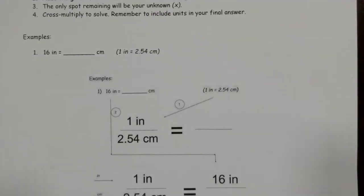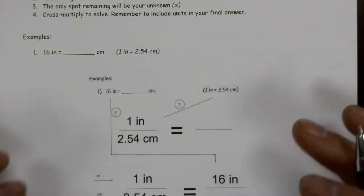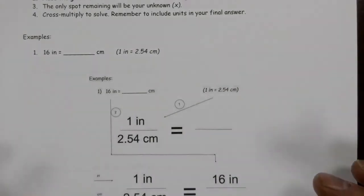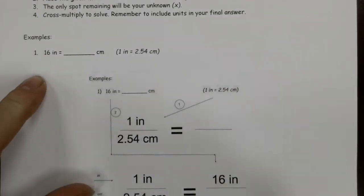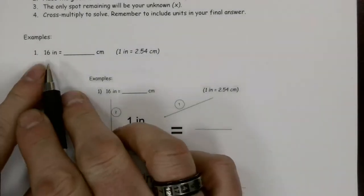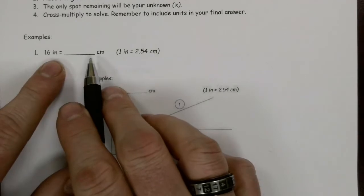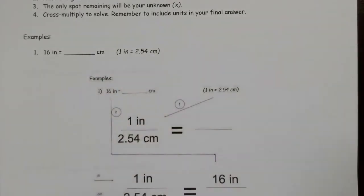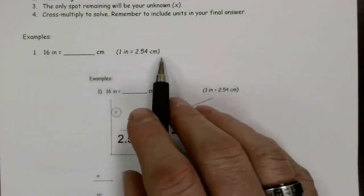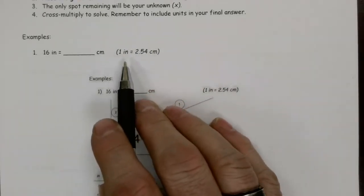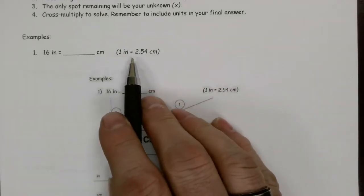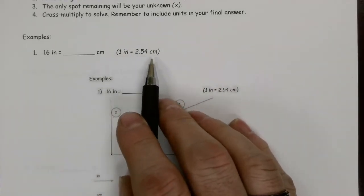We're going to run through a few examples. This first one is going to be worked out in a little more detail than the rest. We're going to convert 16 inches into centimeters. First of all, we need to know what the conversion factor is from inches to centimeters.